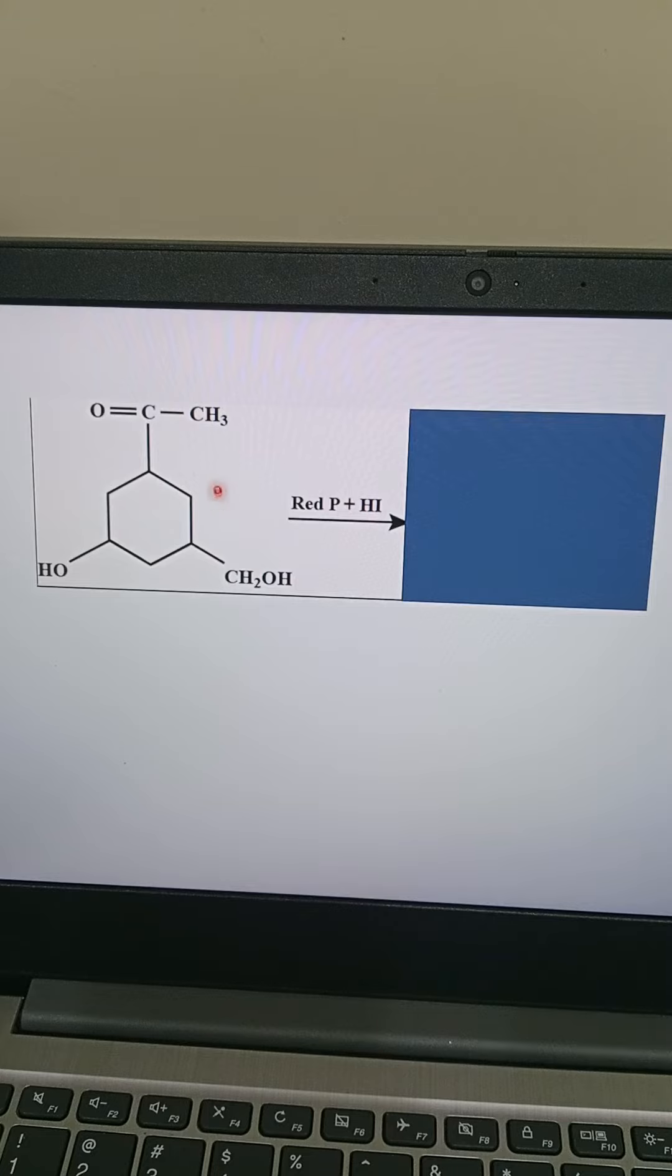So in this molecule, we have three different types of functional groups. This is a keto group. This is a secondary alcohol. And the third one is a primary alcohol.